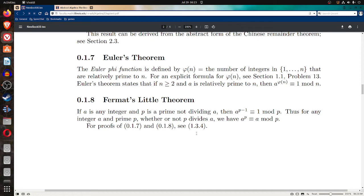Now 0.1.8 Fermat's Little Theorem. If a is any integer and p is a prime not dividing a, then a raised to the p minus 1 is congruent to 1 mod p. Thus, for any integer a and prime p, whether or not p divides a, we have a to the p is congruent to a mod p.